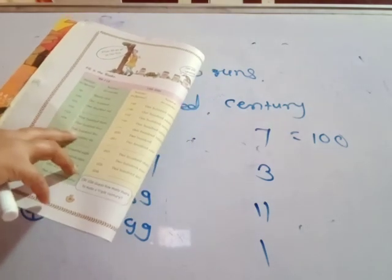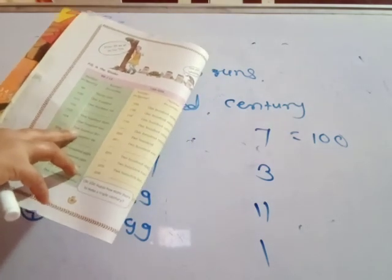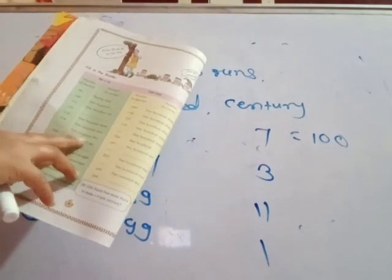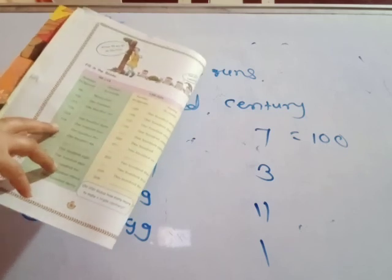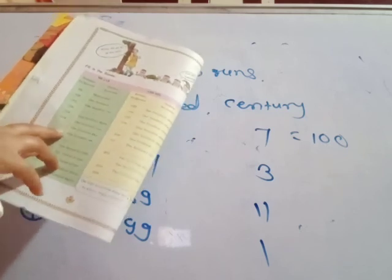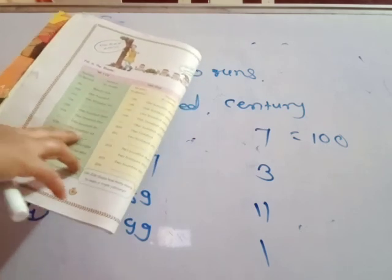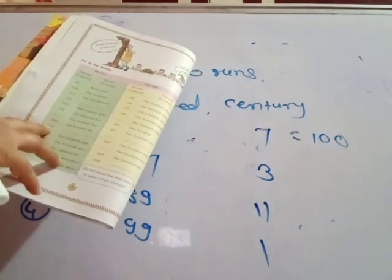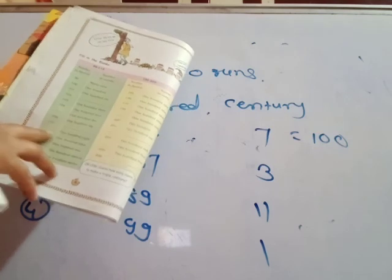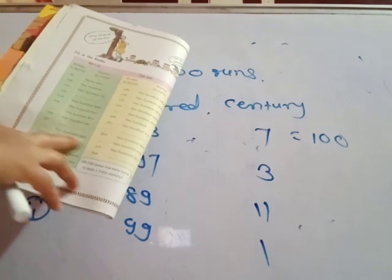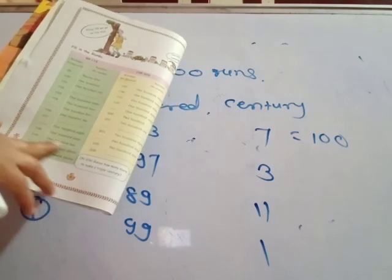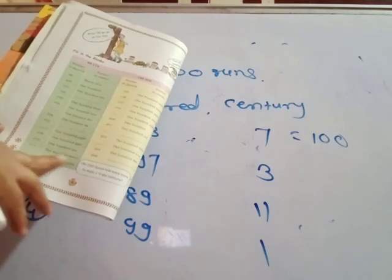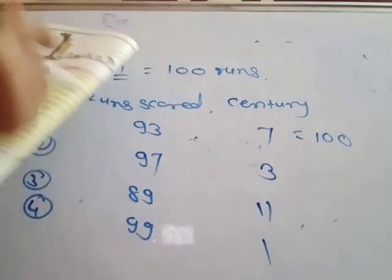104, 105 — number in words given, then you write the number 105 in figures. 106, 107, 108, 109, 110, 111, 112.